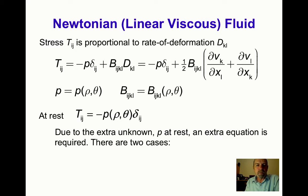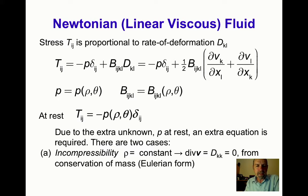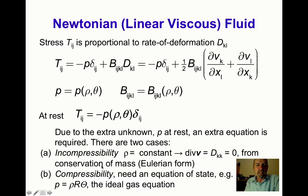Because P represents an extra unknown, an extra equation is required. There are two main cases. The first is incompressibility — the constraint that density is constant — which from mass conservation gives us that the divergence of the velocity vector, or the trace of the rate of deformation tensor, is zero. Alternatively, if the fluid is compressible, we need an equation of state such as the ideal gas equation P equals rho r theta, where theta is the absolute temperature and r is the gas constant.